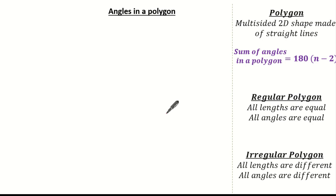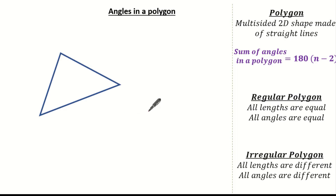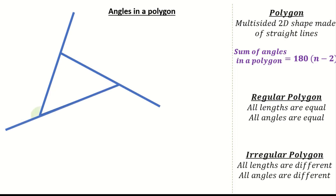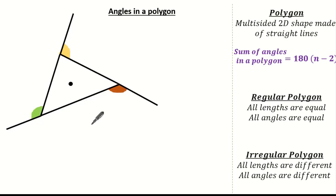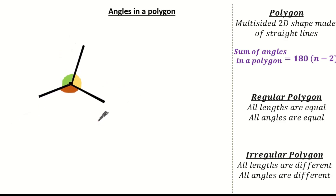Now let's look at some more key words, in particular exterior angles. I'm going to draw this polygon and highlight the exterior angles. To do this I need to elongate a length — elongating each length in turn. The angles created outside of this polygon are called exterior angles. When I bring them all together into the center of my polygon, the sum of the exterior angles will always be 360 degrees.